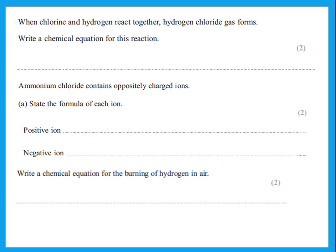When chlorine and hydrogen react together, hydrogen chloride gas forms. Write a chemical equation. Remember that hydrogen and chlorine are diatomic, so chlorine is Cl2 and hydrogen is H2. When they react they form hydrogen chloride. The valency of each is 1, so you cannot put any subscript 2s. The formula is HCl, and you put a 2 before it to balance — that gives the balanced equation.